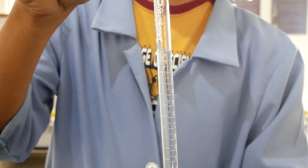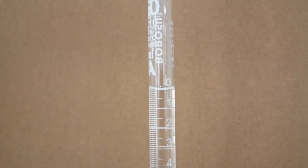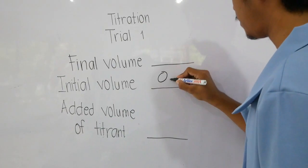Then, fill up the burette to capacity, which should be about zero milliliter. Record this as your initial volume.